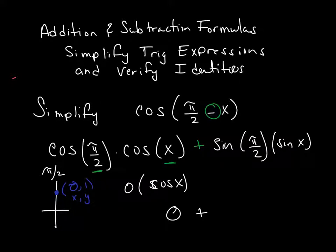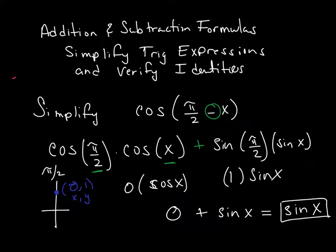I add that to the sine of pi over 2. Well, the sine of pi over 2 is just 1 times the sine of x. So, 0 plus the sine of x is just the sine of x. And that's how you go through and simplify that identity. Word of warning here, just be careful to always break this down.